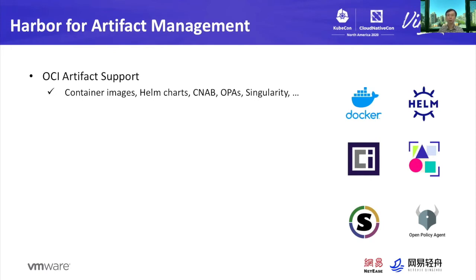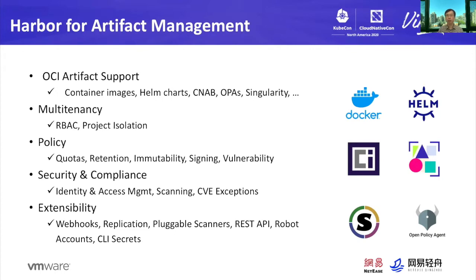Harbor supports OCI artifacts like Docker images, Helm charts, CNABs, Open Policy Agents, Singularities, and so on. In addition, Harbor provides a bunch of features for artifact management, such as RBAC — role-based access control — image isolation by project, image retention, and immutable images. We will cover some of them shortly.